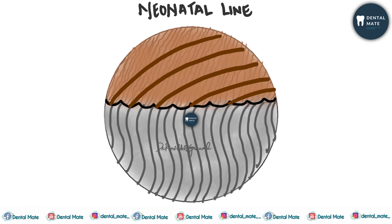Now, the neonatal line: the prenatal and postnatal portions of the enamel are separated by an accentuated incremental line known as the neonatal line. This demarcates a prolonged period of rest which occurs during birth. The prenatal enamel — formed before birth — and the postnatal enamel — formed after birth — are separated by this accentuated line.